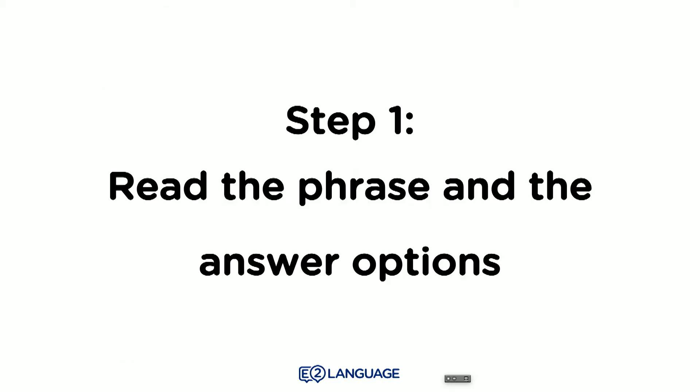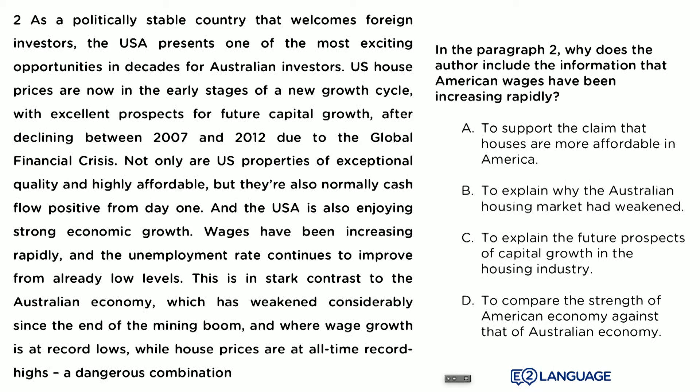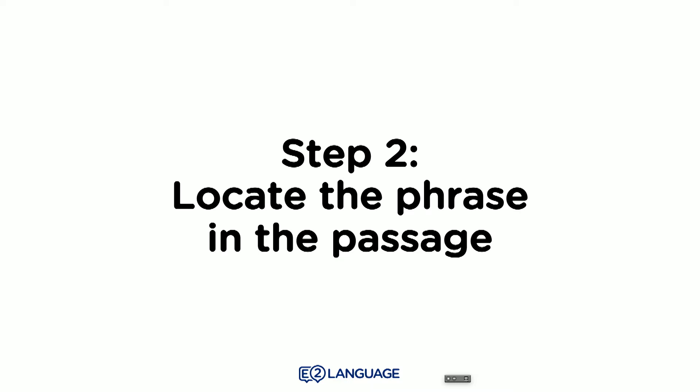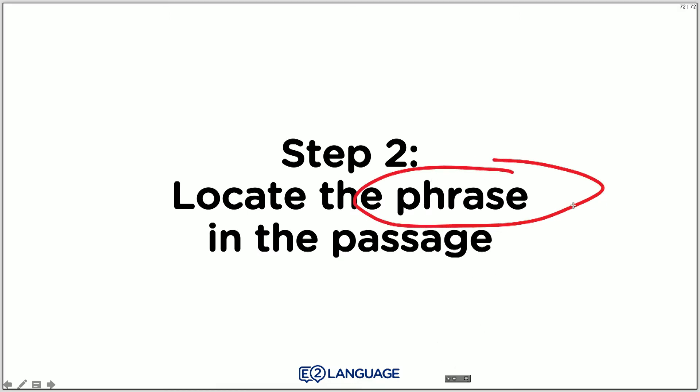Let's look at the method. Step one: read the phrase and the answer options. The phrase is: "why does the author include the information that American wages have been increasing rapidly?" Step two: turn to the text and locate that particular phrase in the passage — we need to find it in order to understand the context.